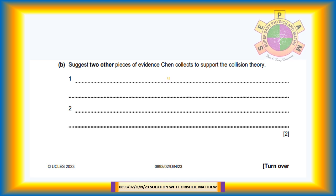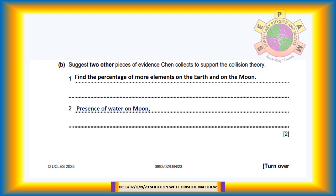Question 11b: Suggest two other pieces of evidence Chen collects to support the collision theory. Chen finds the percentage of more elements on the earth and on the moon. Presence of water on both moon and earth supports the collision theory. Another evidence is the spinning of both the earth and the moon. Another evidence is the similar age of rocks on moon and the earth. Lastly both the earth and the moon have similar types of rock.